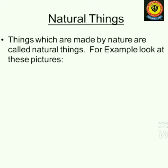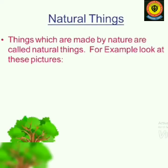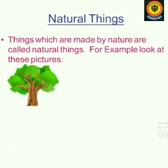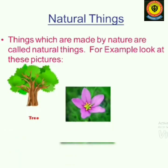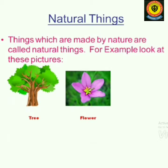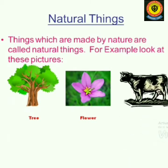Things which are made up of nature are called natural things. Like the first picture shows trees, flowers, and animals — these all are natural things. Nature has created all these things, that is why these things are called natural things.